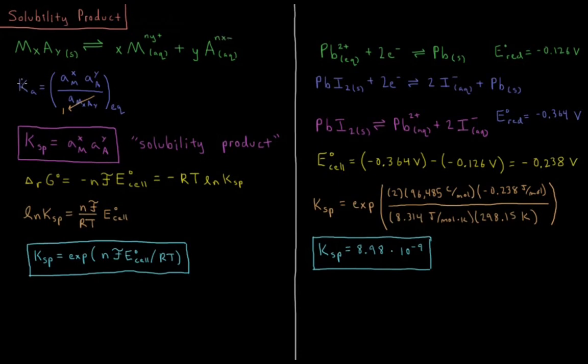If we wanted to write the equilibrium constant of this reaction in terms of activities, we'd have for our products AM to the X times AA to the Y divided by, and then for our reactants there's just a coefficient of 1 there, AMXAY.